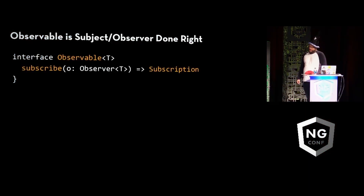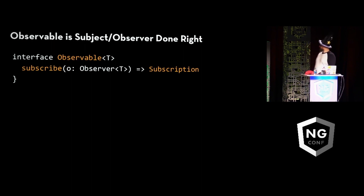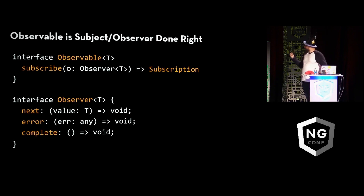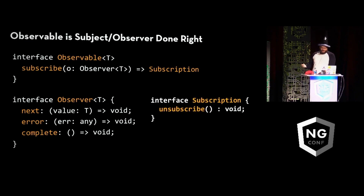It's really what I would say is the subject observer pattern, but done right. What we have is the observable here with a subscribe, and that subscribe takes in an observer. That observer says: notify me when there's something next, when there's an error, and when there's a completion. And then it hands you back the subscription, which will allow you to unsubscribe at any point and clean up the entire chain.